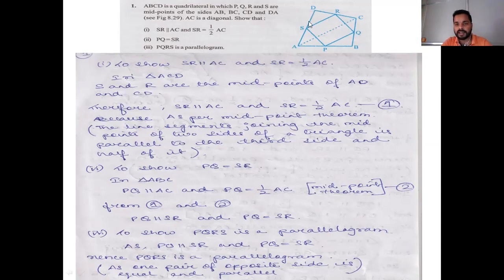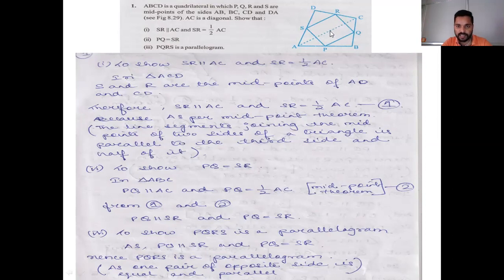Consider triangle ADC. In this triangle, S and R are the midpoints. According to the midpoint theorem, SR will be parallel to AC and SR will be half of AC. Now, reason number 2: PQ is equal to SR.